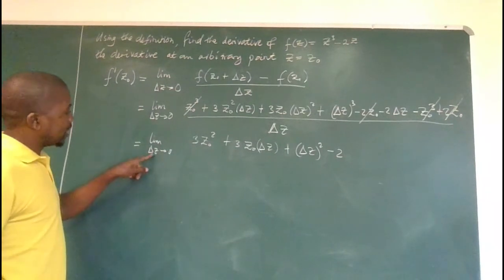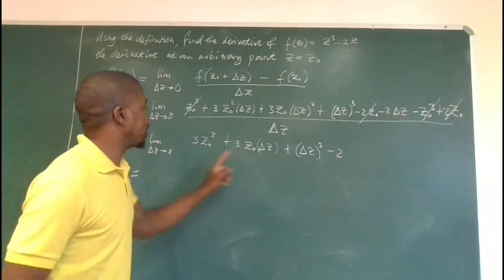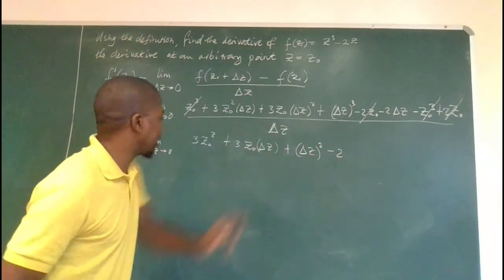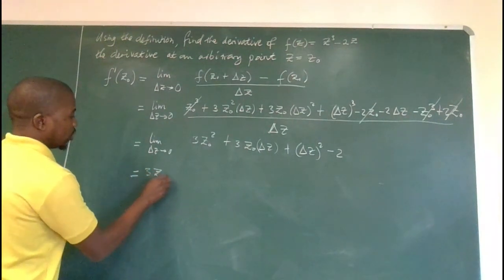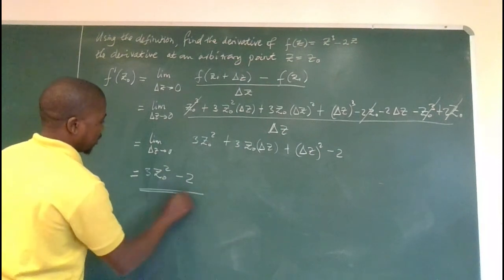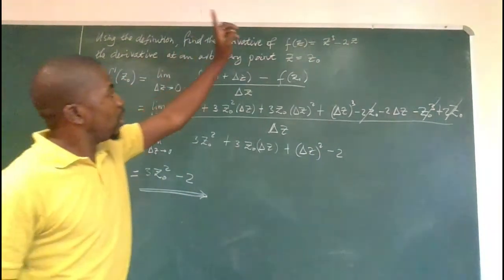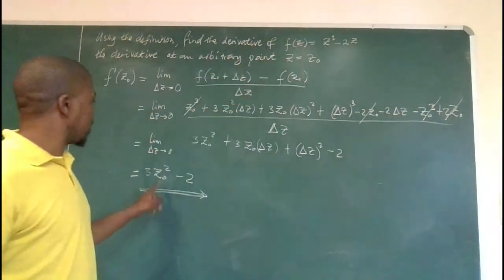So now we evaluate the limit. Where there is delta z, we plug zero. Let's do that. This will become zero, that will become zero. We will remain with that in the last. So we end up with three z naught squared minus two, and this becomes our answer.